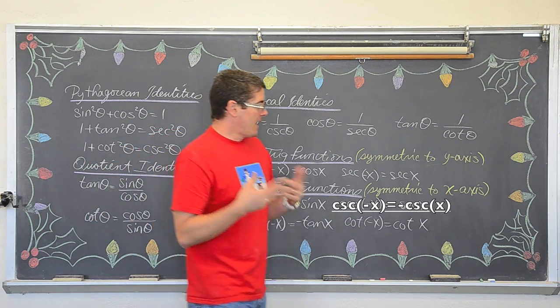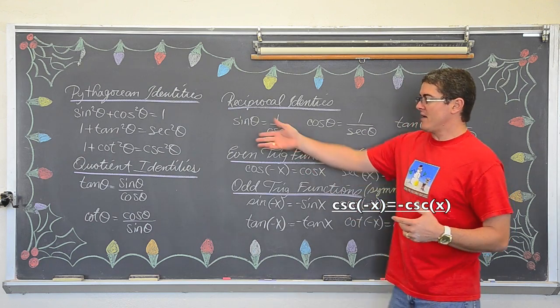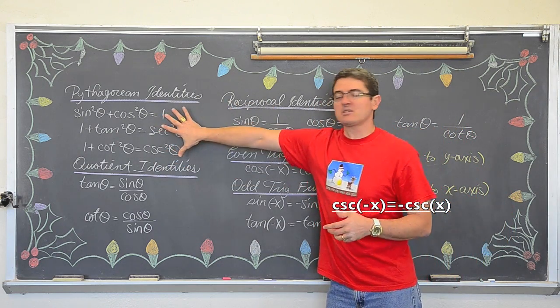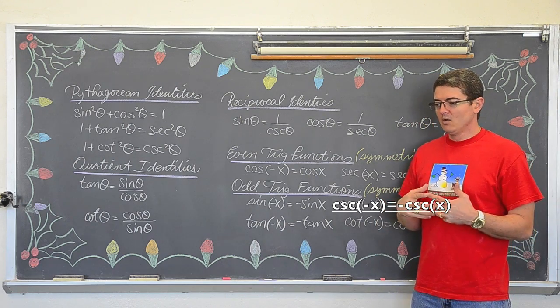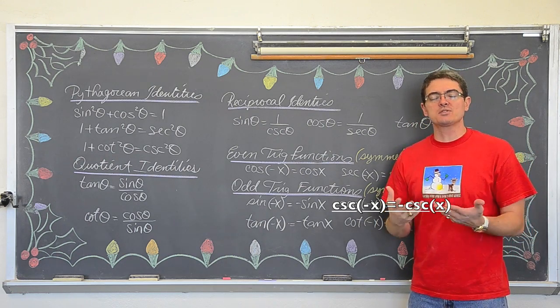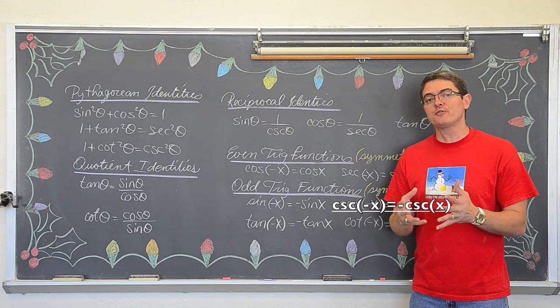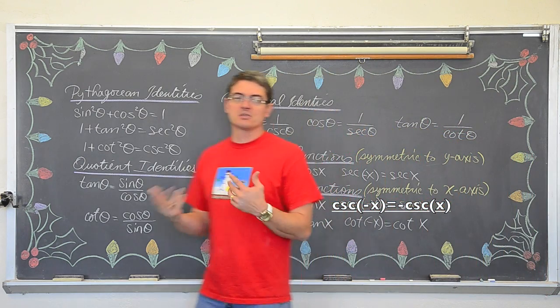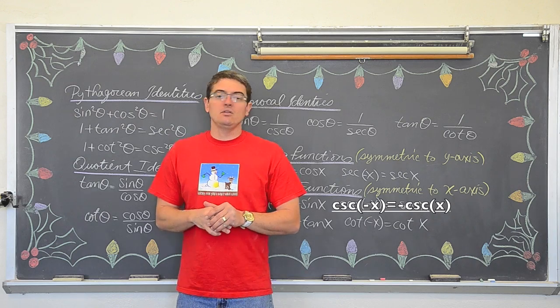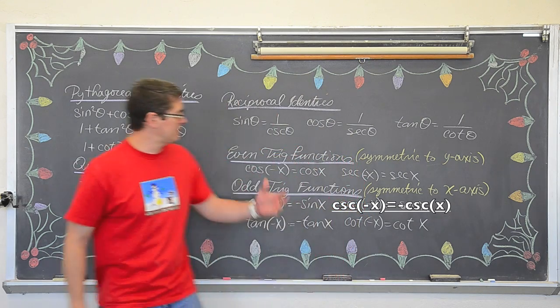Now as we use these identities, we are going to be allowed to manipulate and adjust, especially these three Pythagorean Identities, to adjust them for use in the particular problem or proof that we are doing. Now when you are doing a proof, you are going to want to again make the two sides match. You can do some substitution with these identities.